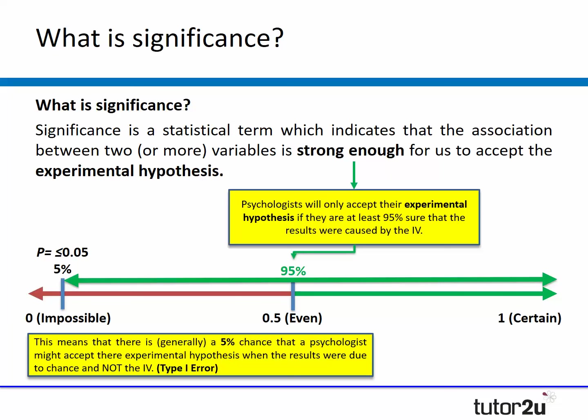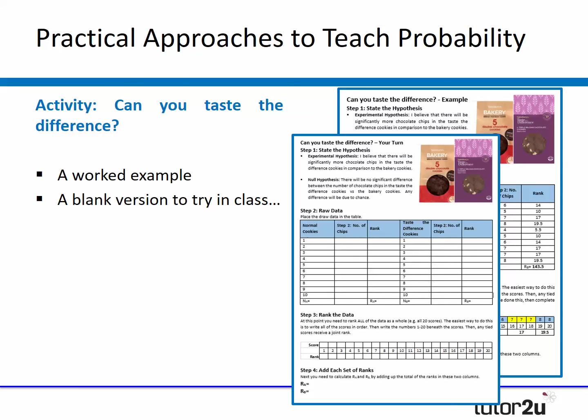At this stage that's still a rather abstract idea, so ideally we want to give students an example they can work through in class — running their own experiment, calculating data, then deciding whether to accept or reject the experimental hypothesis. One way to do that, inspired from the teacher's companion, is an activity called 'Can You Taste the Difference?' bringing in cookies. There are two handouts: a complete worked answer with a guide, and a blank version to run in your classroom, including calculating a Mann-Whitney U test.